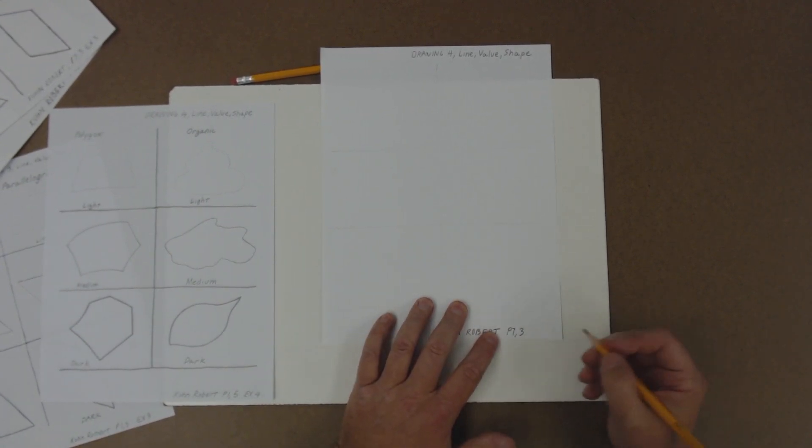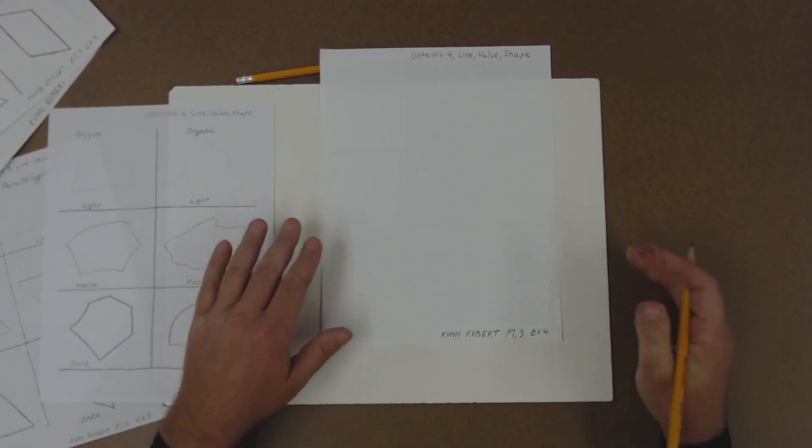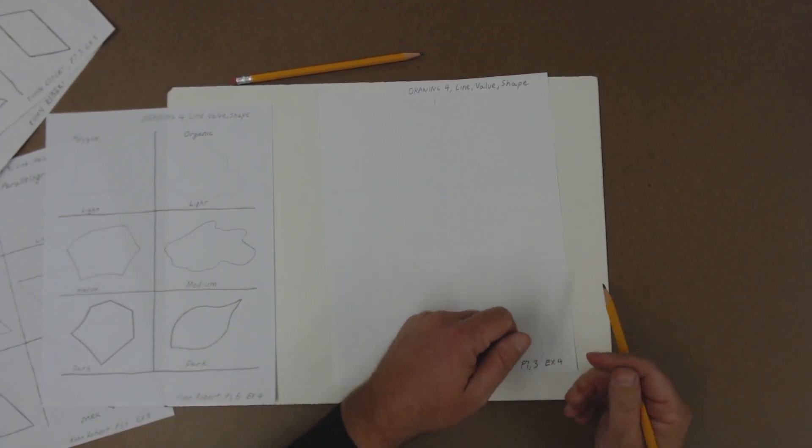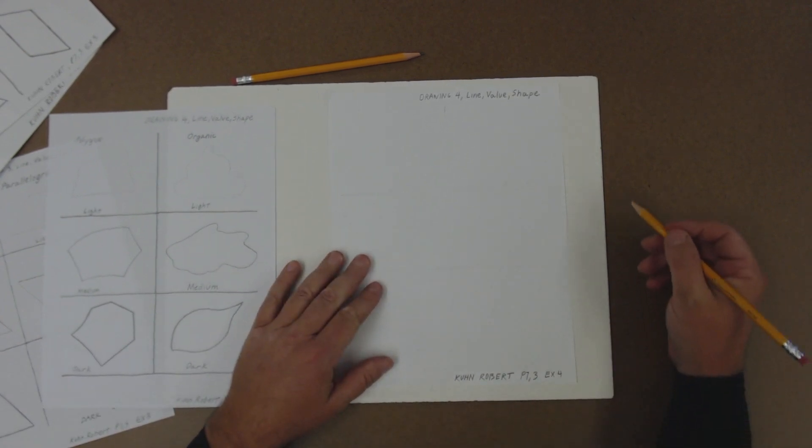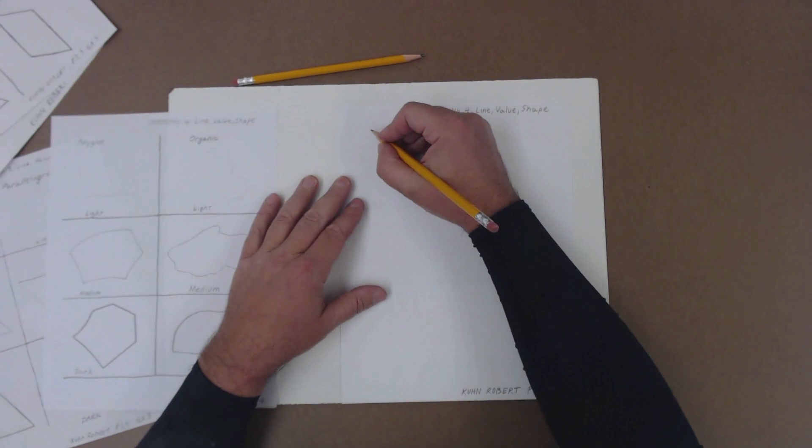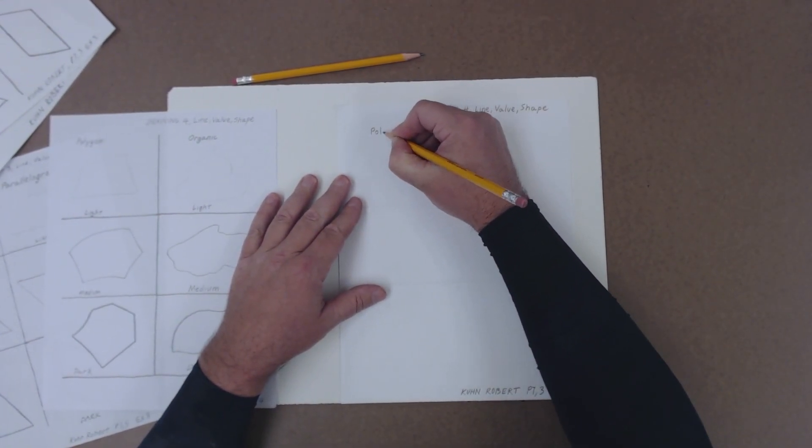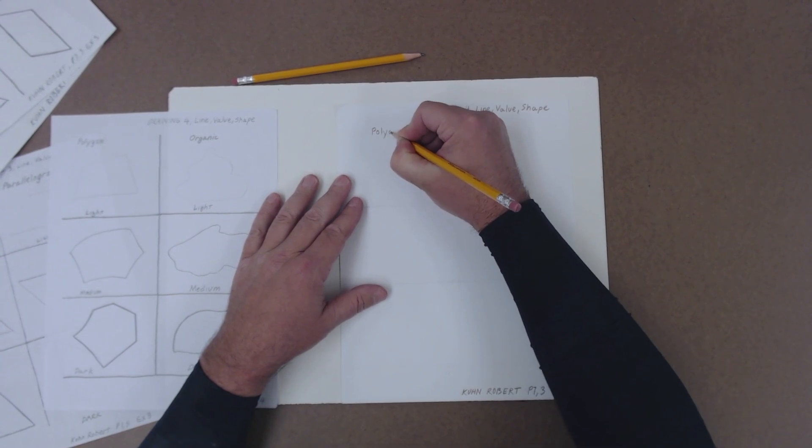And then what's this? This is exercise number four. I know they're all along the same lines. They're all line, value, and shape. But that's the fourth one you've done. So when they're all stapled together, I can just go through very easily. So a polygon. Let's label it. Polygon, as in more than one side.